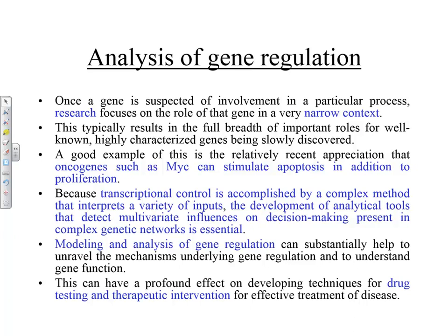Once a gene is suspected of being involved in a particular process, you hone in on that gene and those controlling it and try to study the behavior. A good example is P53, which has been extensively studied. A relatively recent appreciation is that oncogenes such as MYC can stimulate apoptosis in addition to proliferation. MYC is an oncogene — a proto-oncogene that is supposed to accelerate cell proliferation when needed. It took a long time to discover that it could also stimulate apoptosis because you don't have the complete picture.